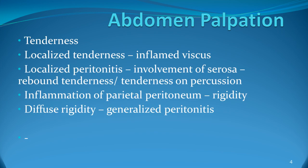On palpation of the abdomen, look for tenderness — localized tenderness for inflamed viscus, localized peritonitis, and involvement of serosa. Is rebound tenderness present or not? Tenderness on percussion signifies inflammation. If rigidity is present, it signifies inflammation of the parietal peritoneum. If there is diffuse rigidity, it signifies generalized peritonitis.